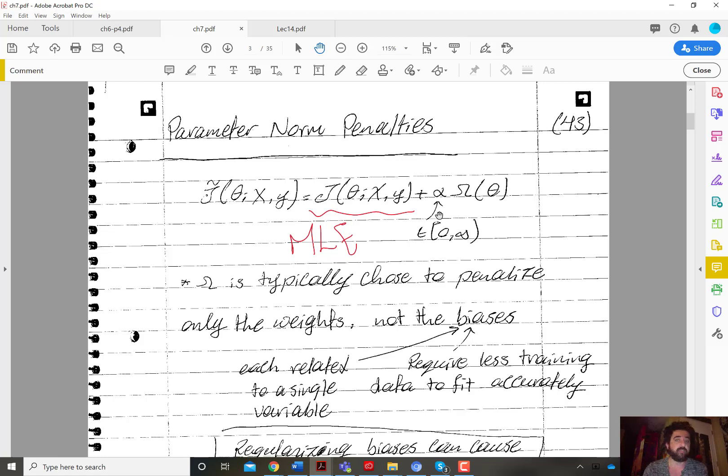Now this alpha is typically between zero and includes the value zero and infinity. Zero corresponds to no regularization at all. Very large value of alpha corresponds to very aggressive regularization.